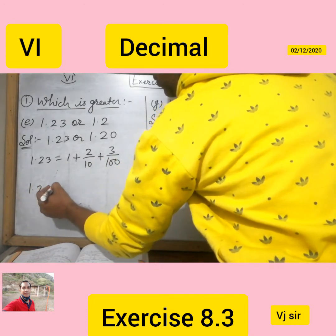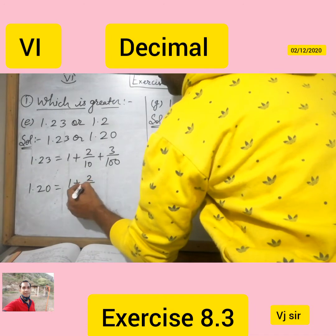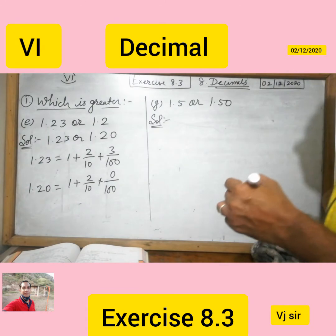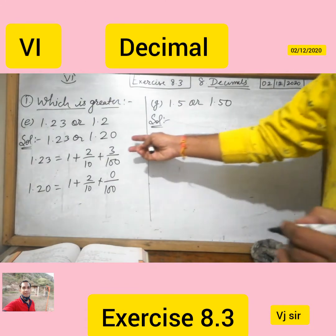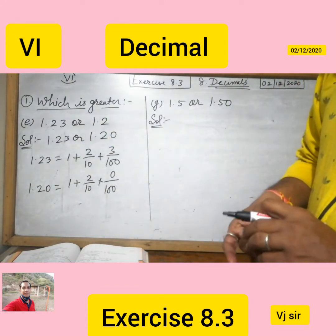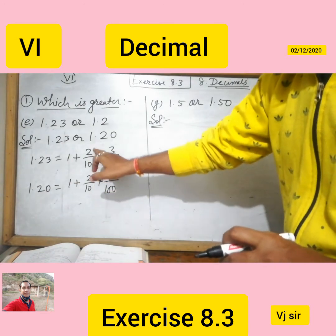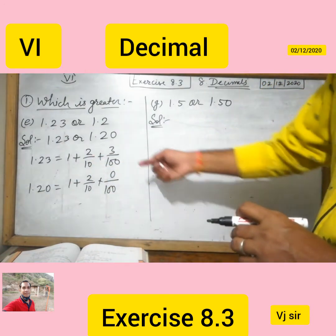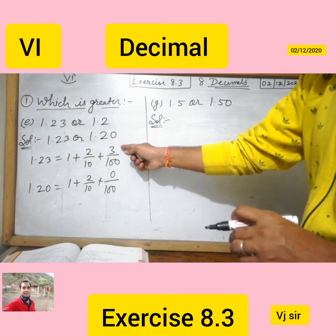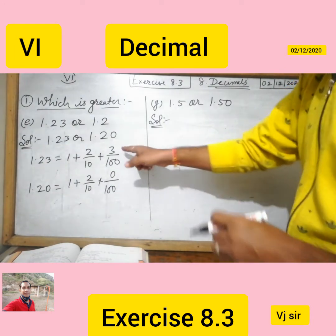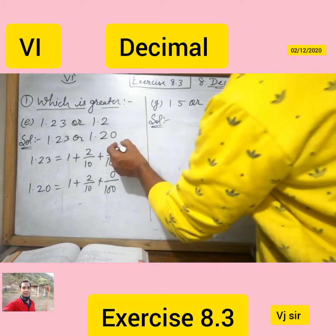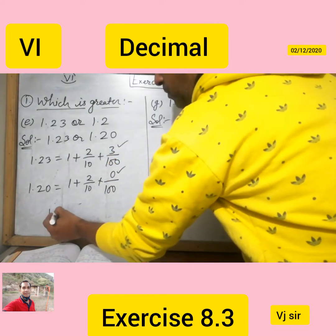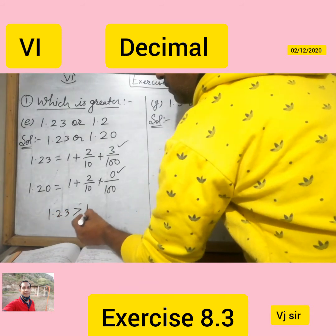And 1.20 is 1 plus 2 upon 10 plus 0 upon 100. Now you see that in both numbers, the digits on the tenths place are the same. On the hundredths place, here is 3 and here is 0. Since 3 is greater than 0, your number 1.23 is greater than 1.20.